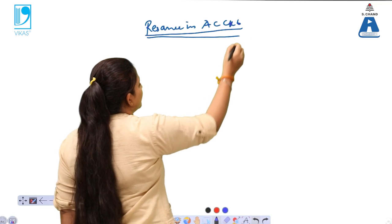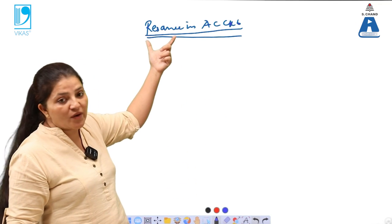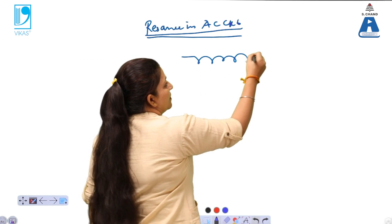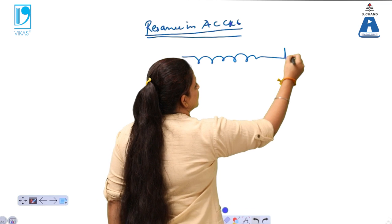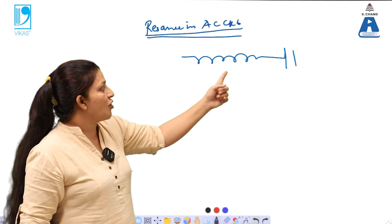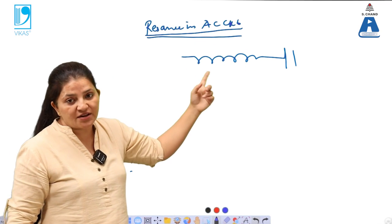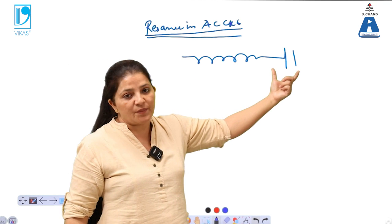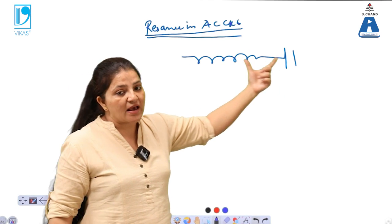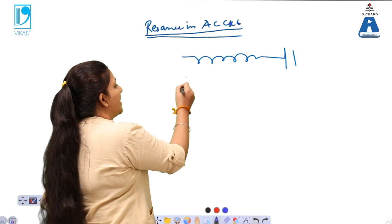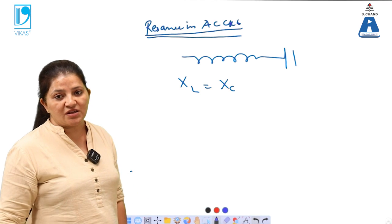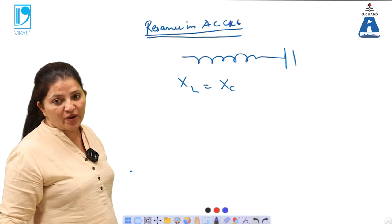What is the meaning of resonance? Resonance means equality. When an AC circuit contains both inductance and capacitance, the voltage drop or reactance of the inductor is given by XL and the reactance of the capacitor is given by XC. When XL equals XC, that is the condition of resonance in the AC circuit.